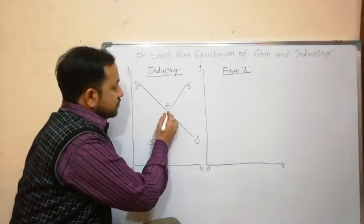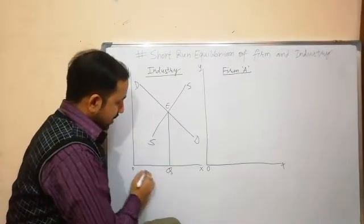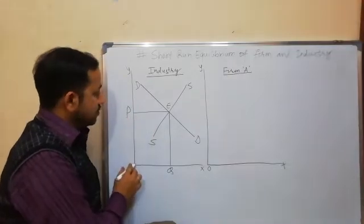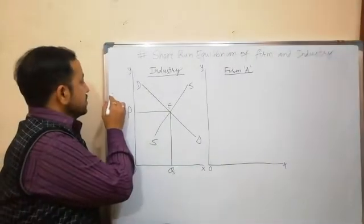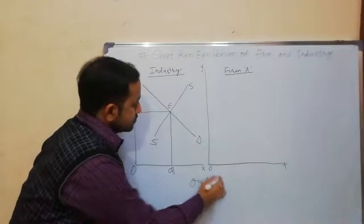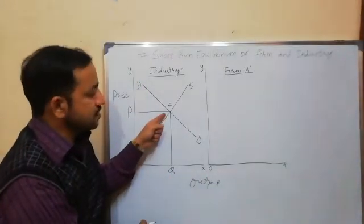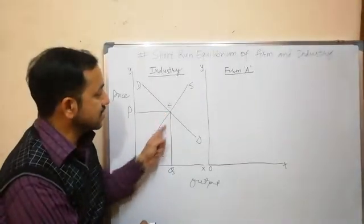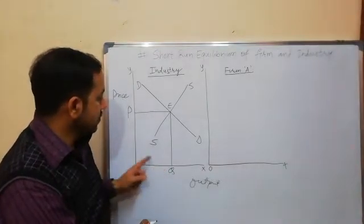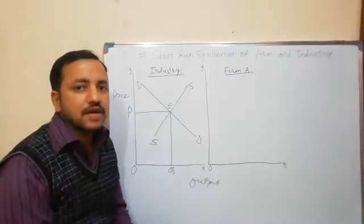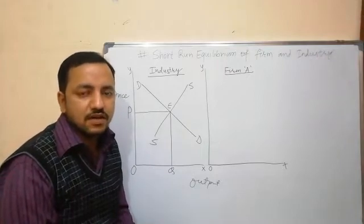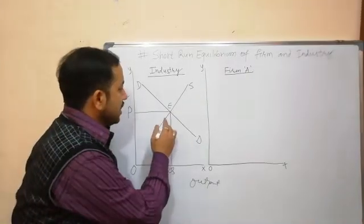The industry gets equilibrium when the demand curve D intersects the supply curve SS at point E. At this equilibrium point, market demand equals market supply at quantity OQ, and the equilibrium price is set by the industry. This equilibrium price is accepted by all the firms in the market.